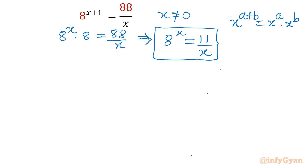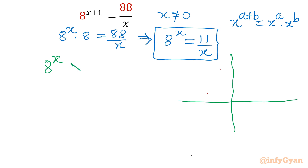Let's draw the graph directly. Now, 8^x — this function is always positive, meaning it is always above the x-axis, and the function is monotonic increasing.